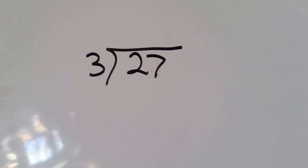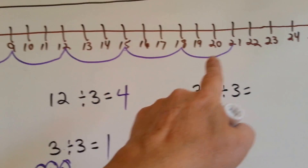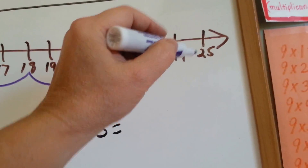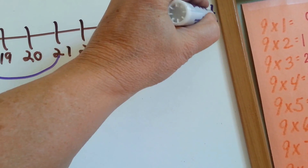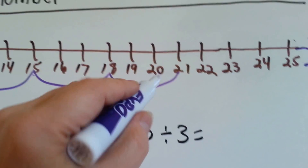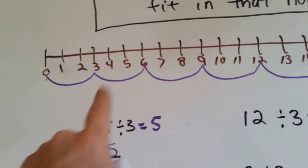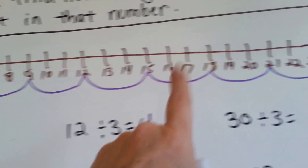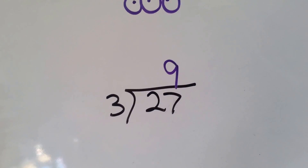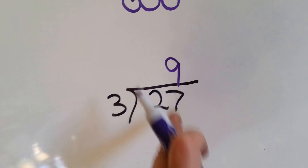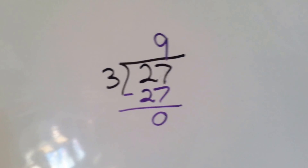3 goes into 27 — how many times? Let's count the bumps on the number line: 1, 2, 3, 4, 5, 6, 7, 8, 9. 3 goes into 27 nine times — not into 2, it's into the 27. Remember, that's why it goes above the 1's place. 3 times 9 is 27. Do our subtraction and get 0. That means we did it correctly.